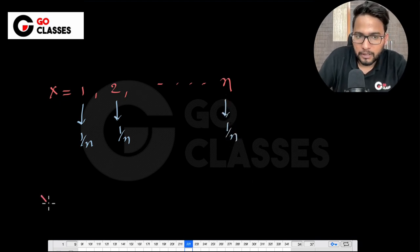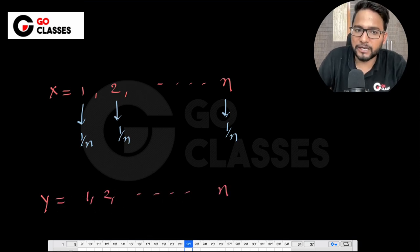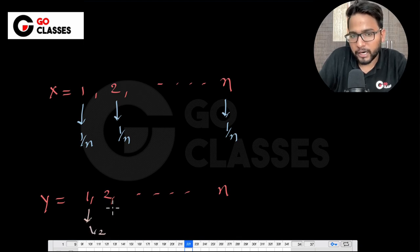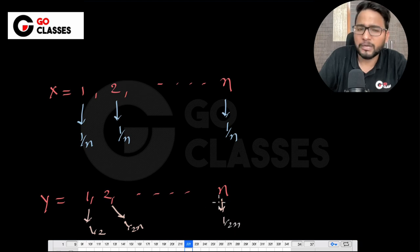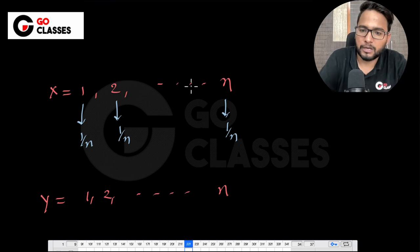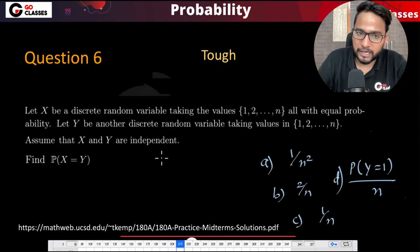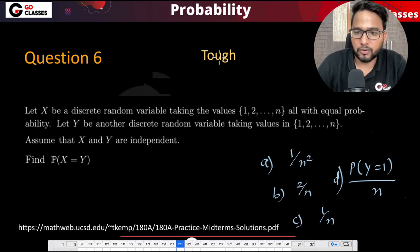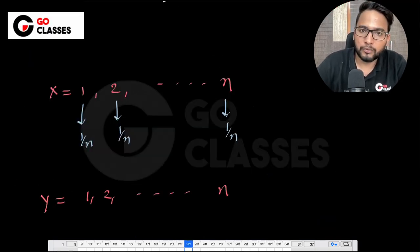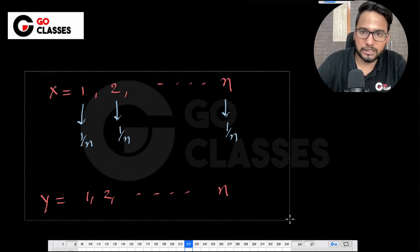Y is also a discrete random variable taking values 1 to n, but its PMF is not specified — the probabilities could be anything. We are told X and Y are independent. We need to find P(X = Y), the probability that both random variables take the same value.